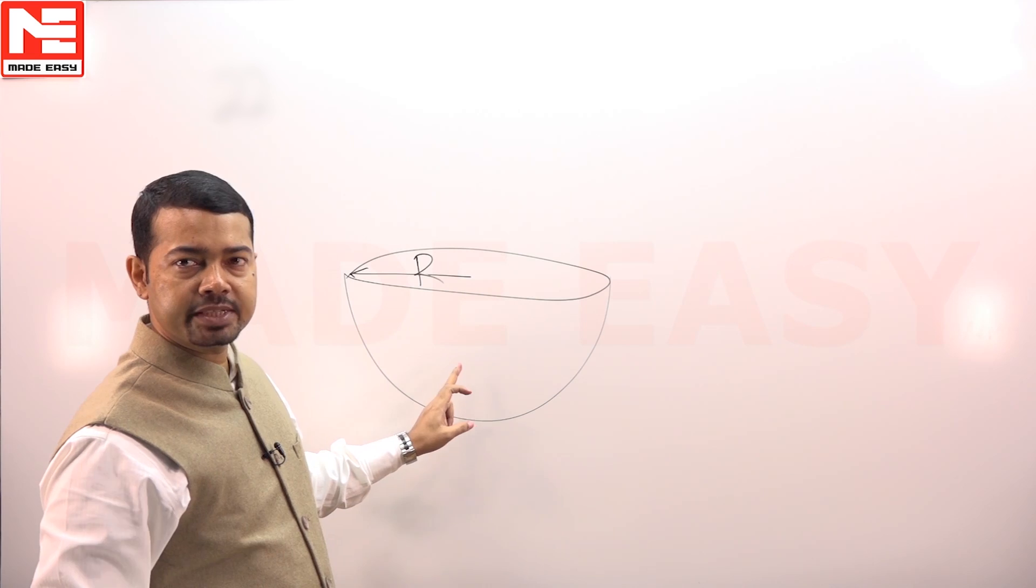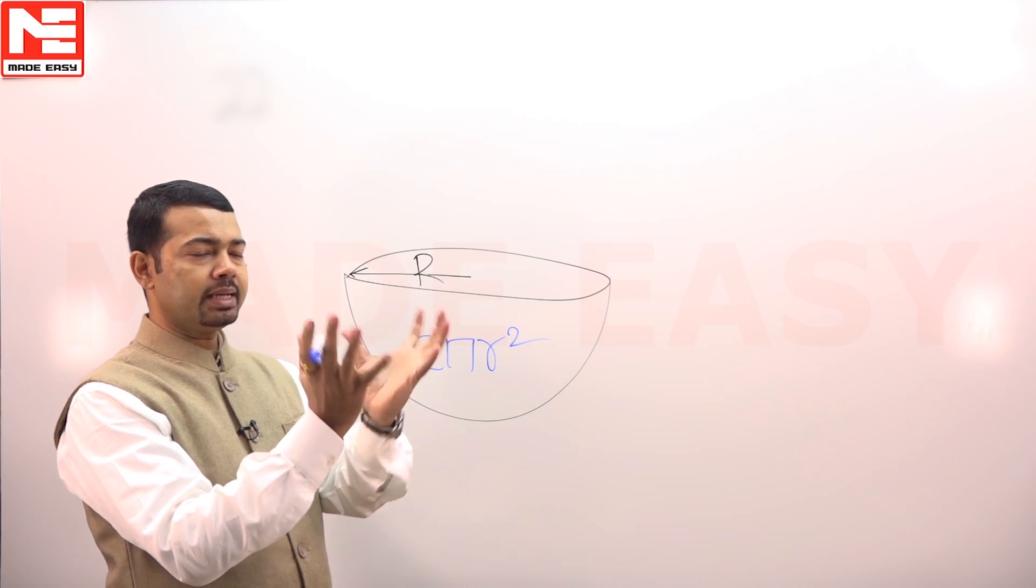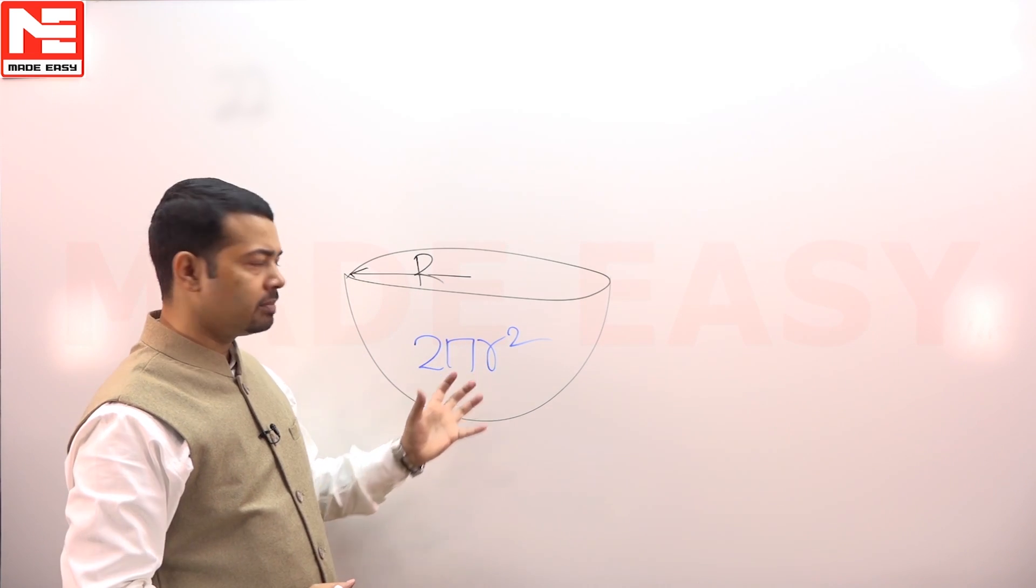What is the surface area? That is 2πr². How? Total sphere is 4πr², so surface area is 2πr².